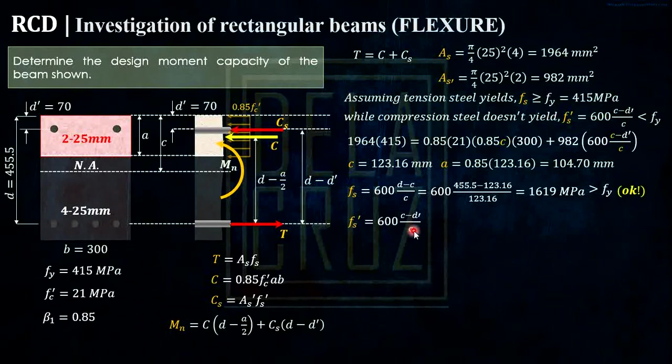How about this one? Using that formula, 600C minus D prime, and substitute, our C is 123.16, D prime is 70. And that is 259 megapascal. And as you can see, that is lesser than FY, which is 415 megapascal. And this is also correct. Our assumption for that is correct. Meaning, we can proceed to our solution.